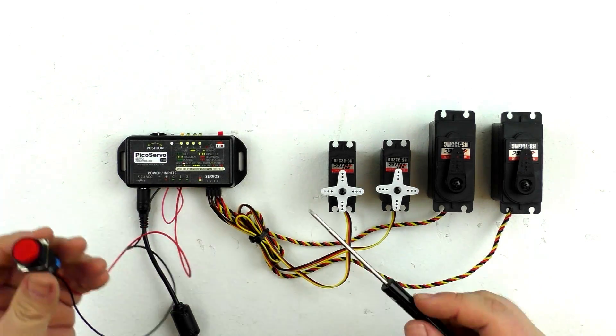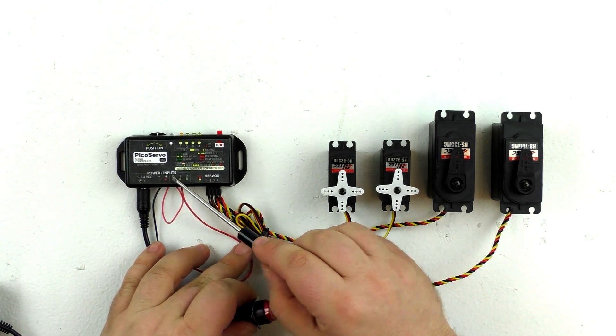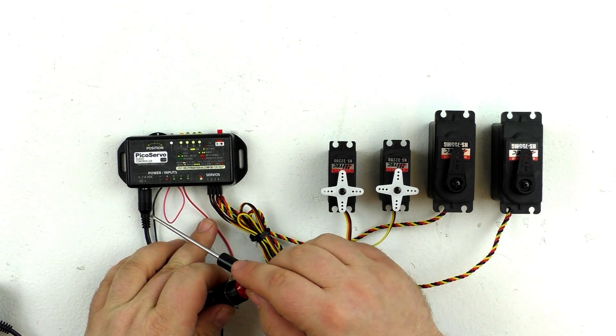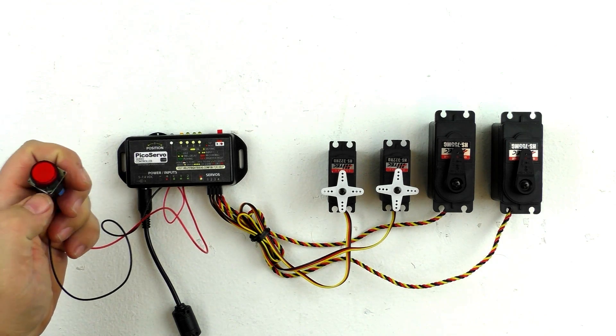All right, so we have our push button wired up. You can see here that we have our jumper wire between positive and common. Then we have one wire from the push button going to one, and the other wire going to negative. Now if we push our button here, it's going to play our show.